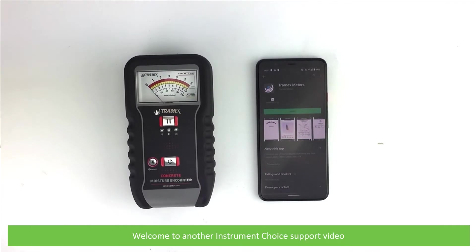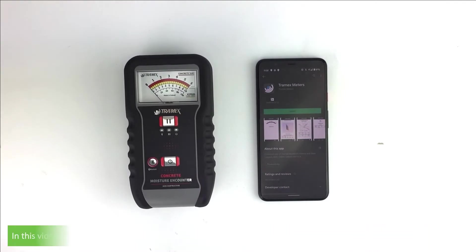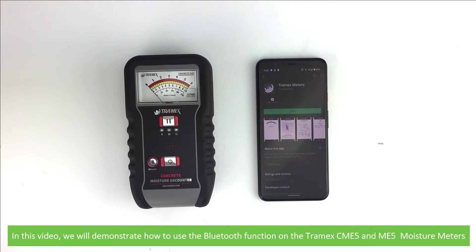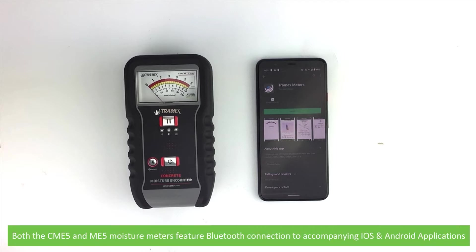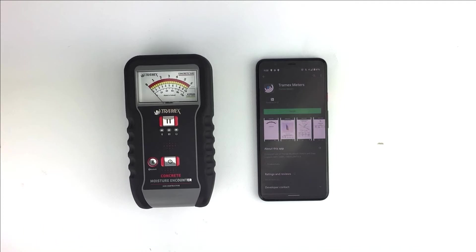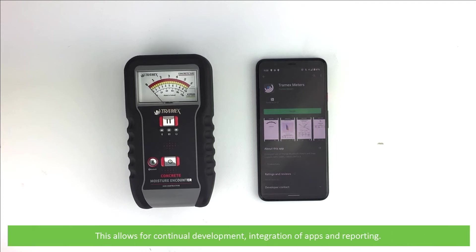Hi and welcome to another Instrument Choice support video. In this video we'll demonstrate how to use the Bluetooth function on the Tramex CME5 and ME5 moisture meters. Both the CME5 and ME5 moisture meters feature Bluetooth connection to accompanying iOS and Android applications. This allows for continual development and integration of apps and reporting.